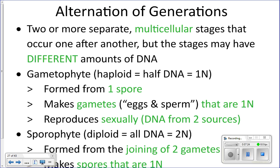Algae life cycles are unusual — they have what's called an alternation of generations life cycle. This involves two or more separate multicellular stages that can have different amounts of DNA. The two stages are called the sporophyte and the gametophyte; they're made of many cells and differ in their amount of DNA.